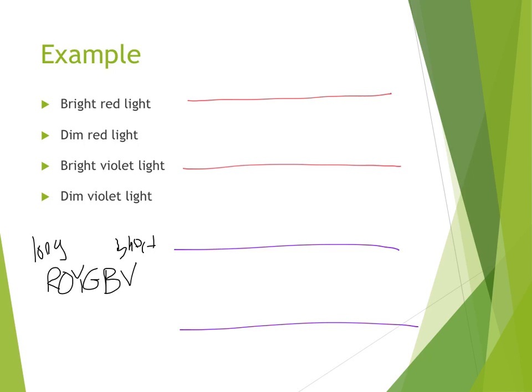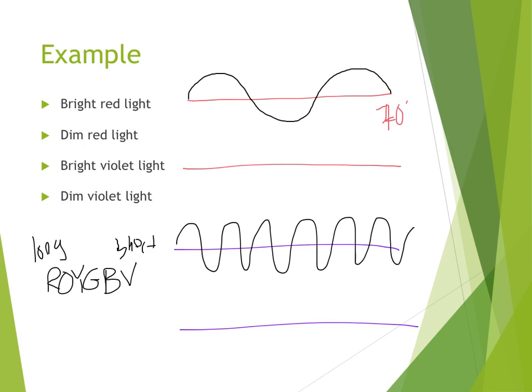So when I draw these, red light is going to be pretty long, whereas violet light is going to be pretty short. Red light is around 700 nanometers long, whereas violet light is around 400 nanometers long.